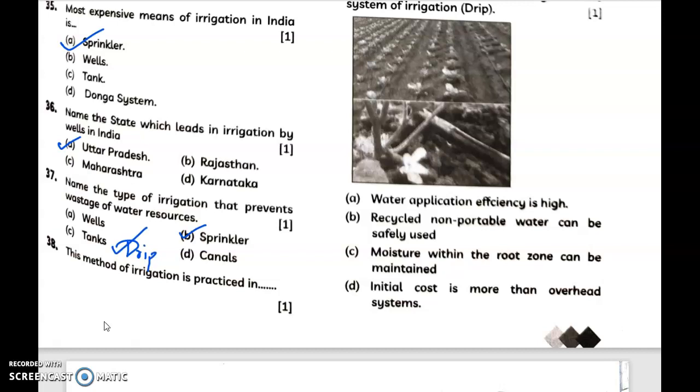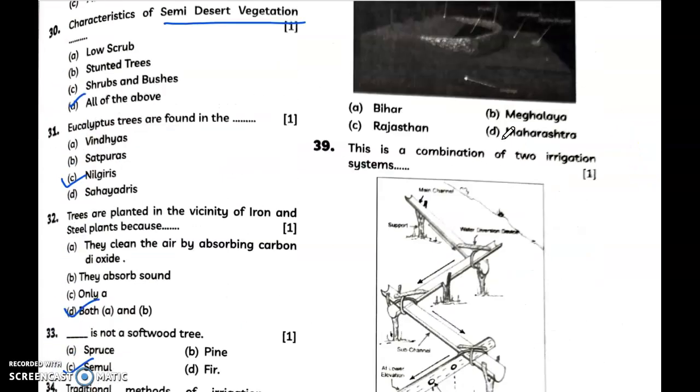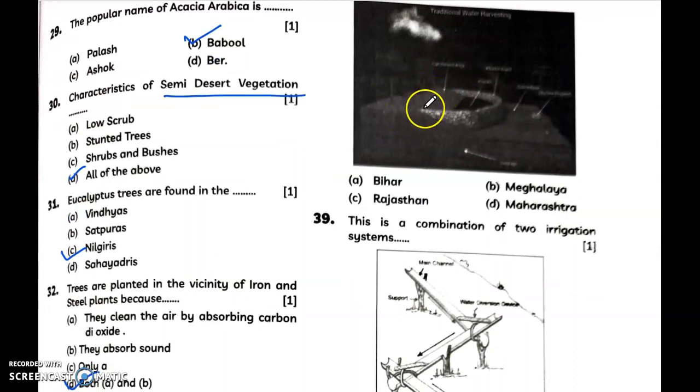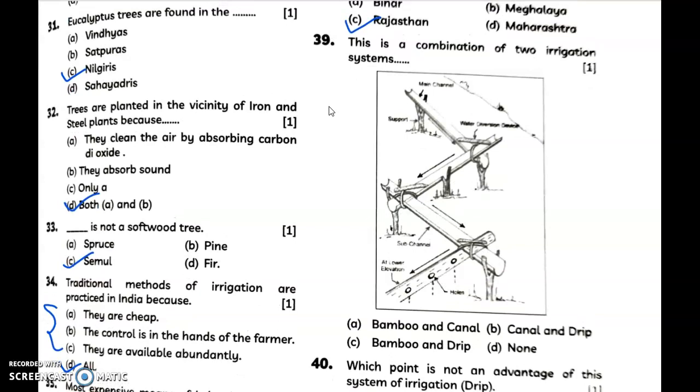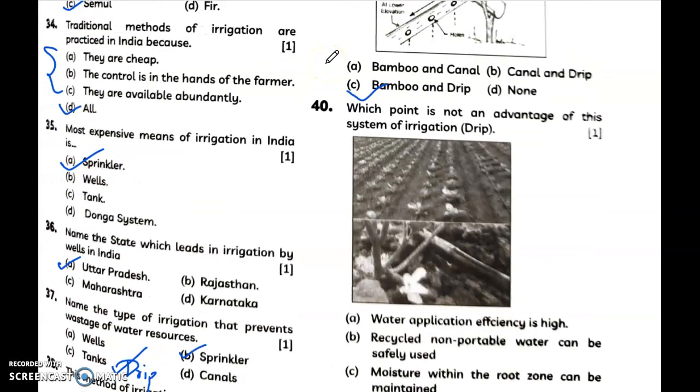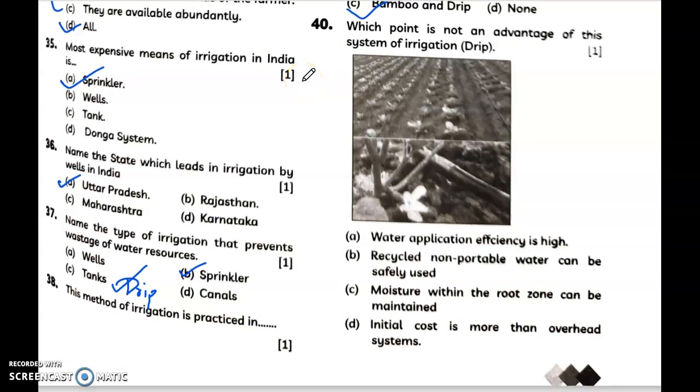Question 38. You can see this diagram if it's visible. Answer is option C, that is Rajasthan. This is a combination of two irrigation systems. What is the answer? Bamboo and drip. Which point is not an advantage of this system of irrigation? Answer is initial cost is more than overhead systems.